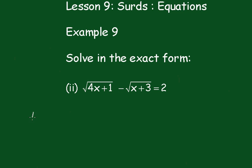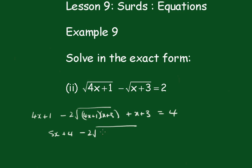We get 4x plus 1 minus twice the product 2√((4x+1)(x+3)) plus x plus 3 equals 4. So we get 5x plus 4 minus 2√((4x+1)(x+3)) equals 4.